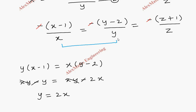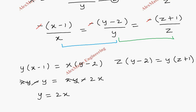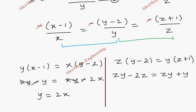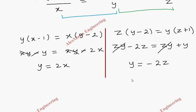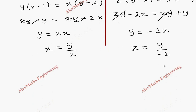Equating the second and third terms and cross-multiplying: z(y−2) = y(z+1), giving zy − 2z = zy + y. Canceling zy on both sides: −2z = y, so y = −2z, or equivalently z = −y/2. Also from earlier, x = y/2.